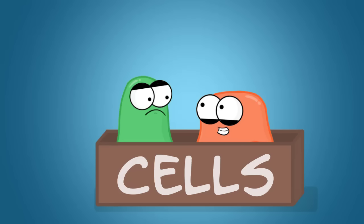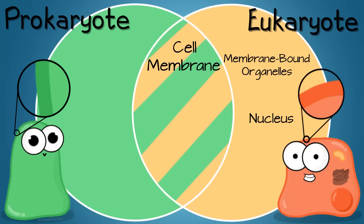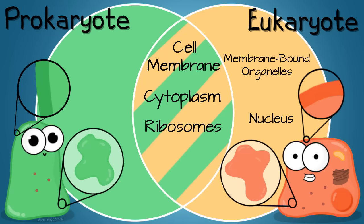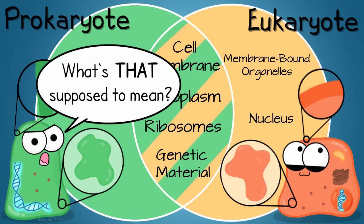Both prokaryotes and eukaryotes are cells, though, and therefore they do have a few things in common that cells have, including a cell membrane, cytoplasm, ribosomes, and genetic material. But just look at these two cell types and you will see that one is way more simple.